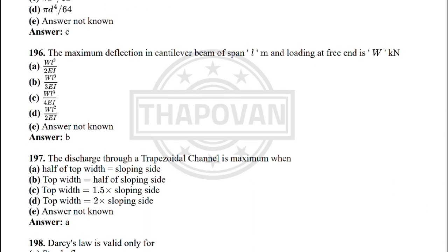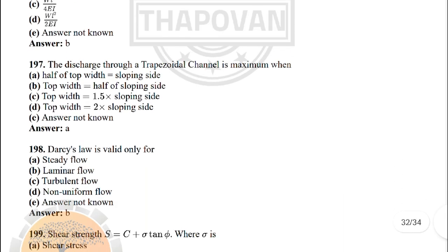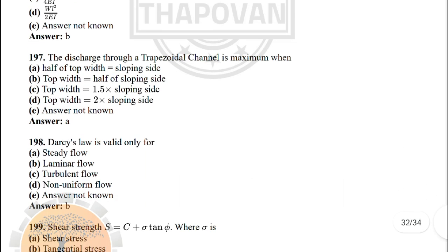Next: the maximum deflection in a cantilever beam of span L metres loaded at the free end with W kN — the correct answer is option B: WL³ / 3EI. Next: the discharge through a trapezoidal channel is maximum when — the correct answer is option A: half the top width equals the sloping side.